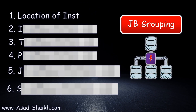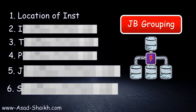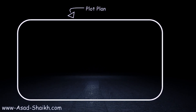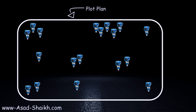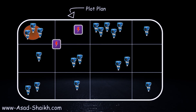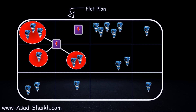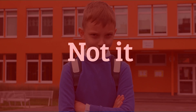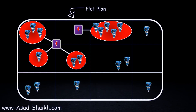The first rule of junction box grouping is to use the instrument location for near junction box allocation. Looking at the plot plan, instruments will be scattered at various places. The plot plan is divided into various areas, and depending on the density of instruments you assign junction boxes. For example, for a denser area you might have one junction box catering to that area, but there are more important criteria to consider.